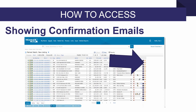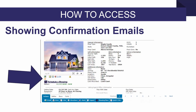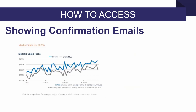We also have some integration at the MLS results level. You can click here for an InfoSparks chart right next to a single listing in that line — it'll give you stats for that local area around that listing. You can also click into InfoSparks from a listing detail page. And when you're doing showings with ShowingTime, the confirmation emails you receive will also have an InfoSparks chart at the bottom, showing the trend of that area versus the region.